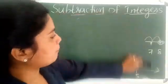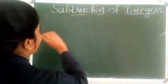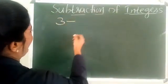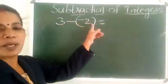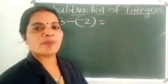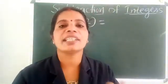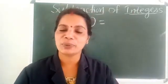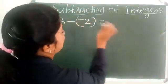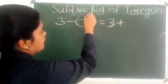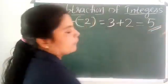Next step: how to subtract two integers with different signs? For example, 3 minus minus 2. To subtract any two integers, we add the additive inverse of that number. So 3 minus minus 2 becomes 3 plus the additive inverse of minus 2. The additive inverse of minus 2 is 2. Therefore, 3 plus 2 equals 5.